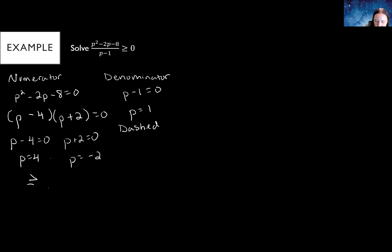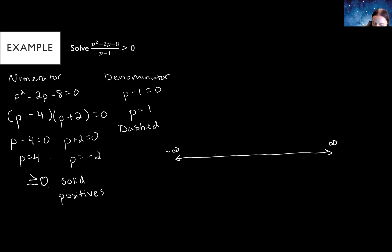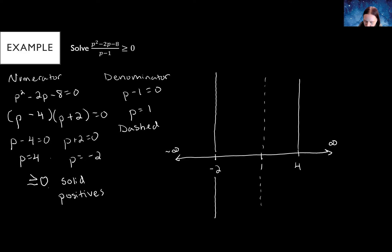Draw your number line. Now we've got three numbers: negative two, one, and four — three values instead of two like the previous example. One came from the denominator, so that's dashed. The other two are going to be solid lines. When you have three things to set up, you're going to have three rows above the number line and one below, so make sure your chart is tall enough.